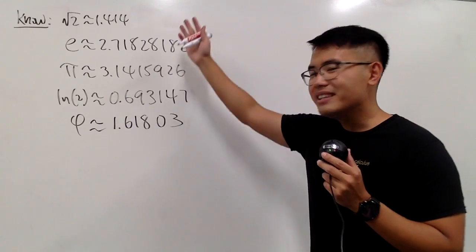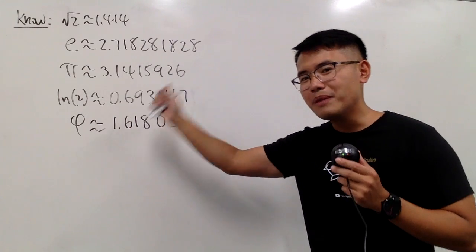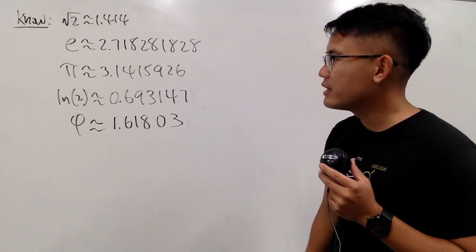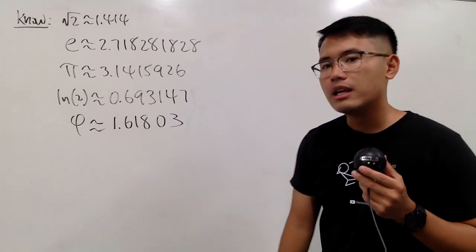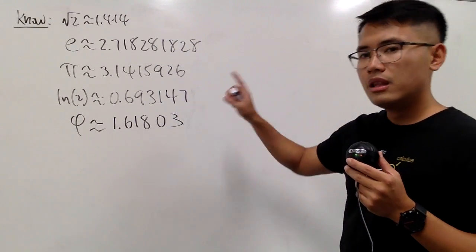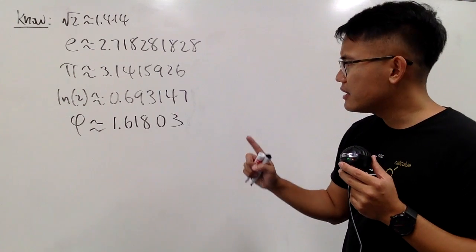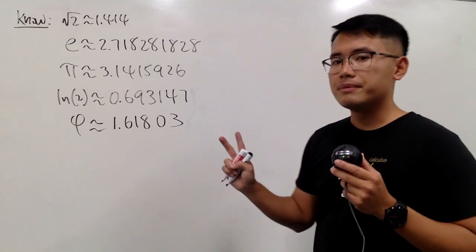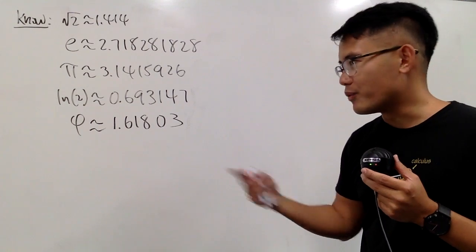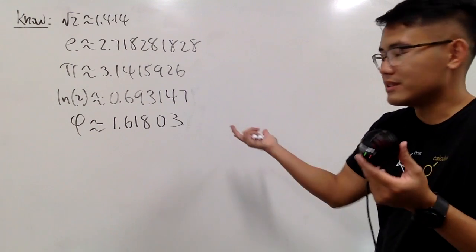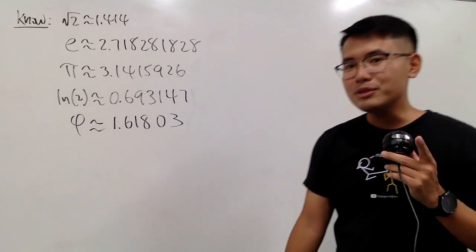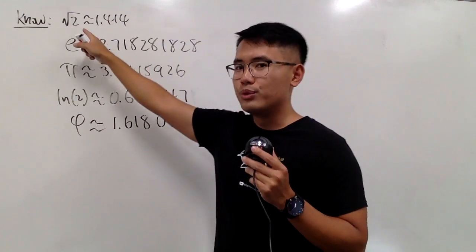As you can see, I put some of the famous irrational numbers on the board, along with their decimal expansions on the side. If you look at the decimal expansions, technically they don't end, they don't repeat, and it doesn't seem like there is a pattern for these numbers. Of course, we know these are irrational numbers, but let me talk about the square root of 2 a little bit.